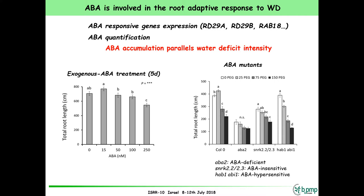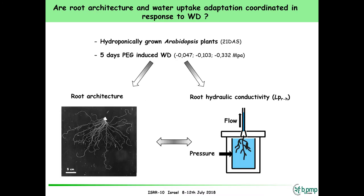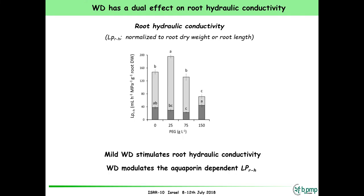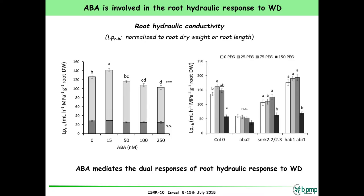Now for the second part: we use the pressure chamber probe. We put the root system in a sealed chamber, apply pressure, and measure the flow, allowing us to deduce root hydraulic conductivity. Again in hydroponics, applying different PEG concentrations, we see that applying PEG increases root hydraulic conductivity for mild stress, and at higher stress levels, root conductivity is repressed. When we block aquaporin activity using chemicals — looking at the residual water conductivity — we see it is mainly the aquaporin-dependent activity that is stimulated by PEG application.